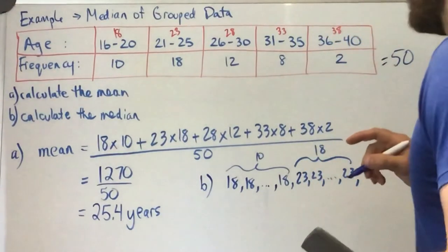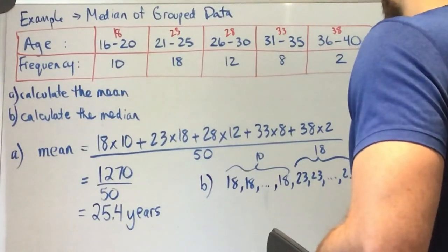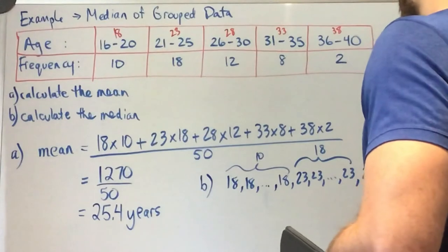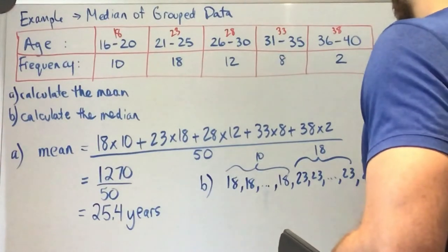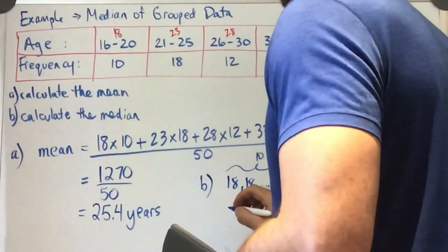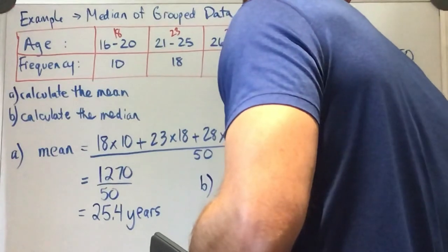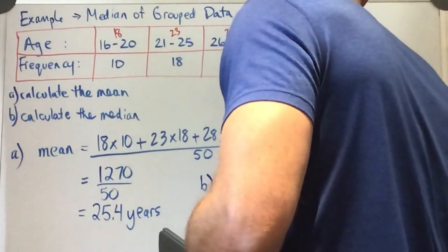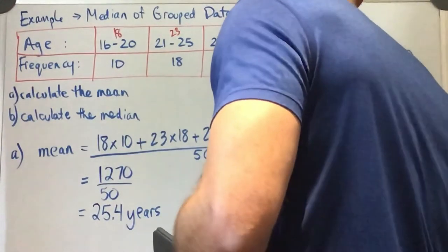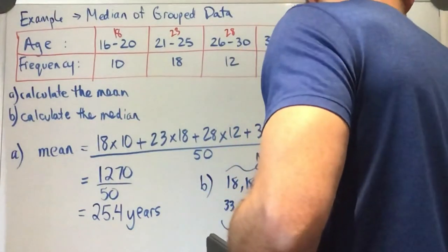Then we're going to have 12 twenty-eights, then we're going to have 8 thirty-threes, and then we're going to have 2 thirty-eights.